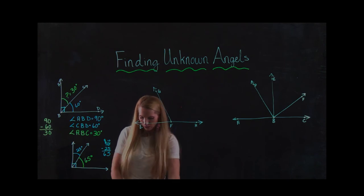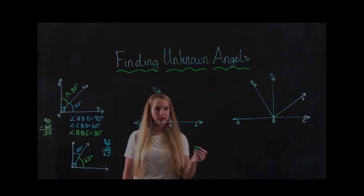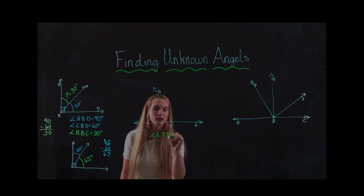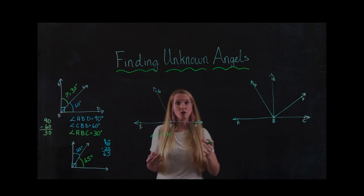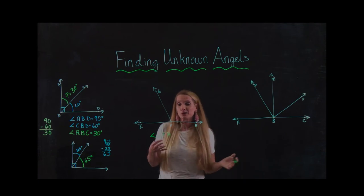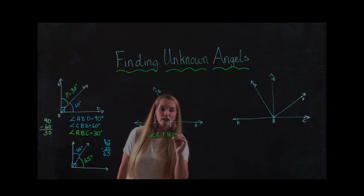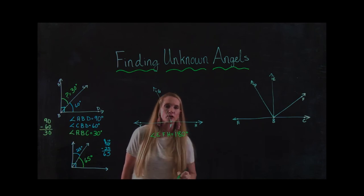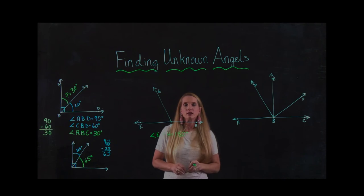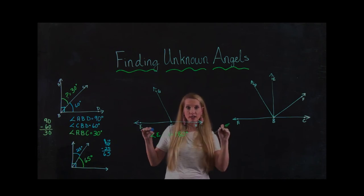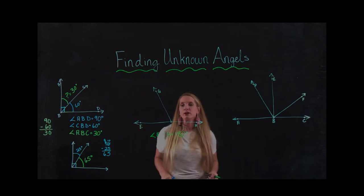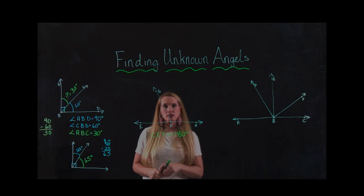Now let's look at the bigger angle here. I know that EFH is a straight line. So what do I know about a straight line? It's considered a straight angle. So I know EFH is a straight line. It's 180 degrees. That straight line is 180 degrees. And we learned that a couple of videos back when we talked about straight angles. They have to measure 180 degrees because they're a straight line.